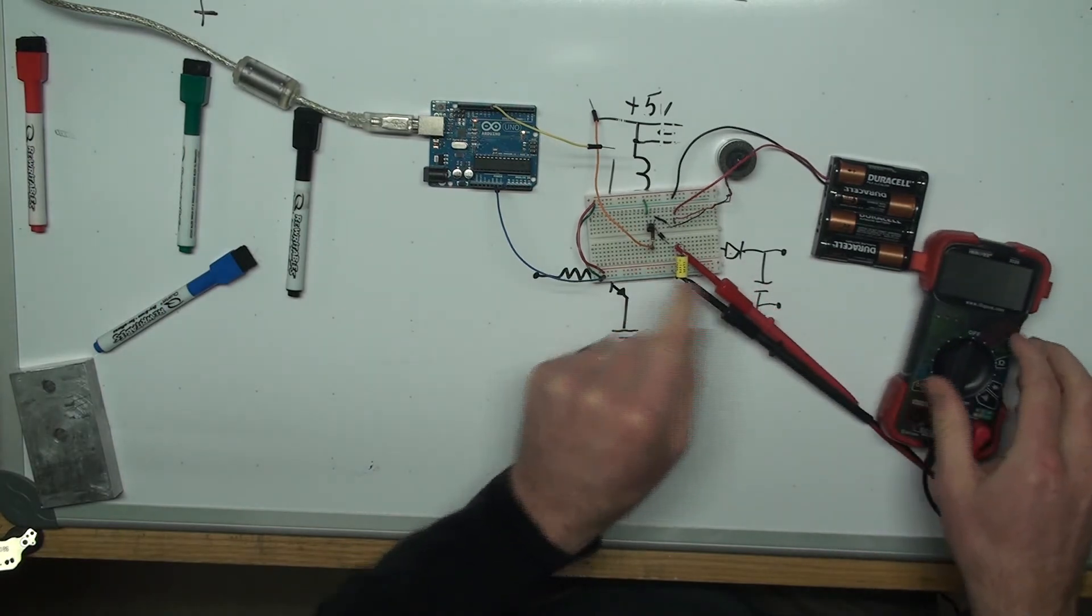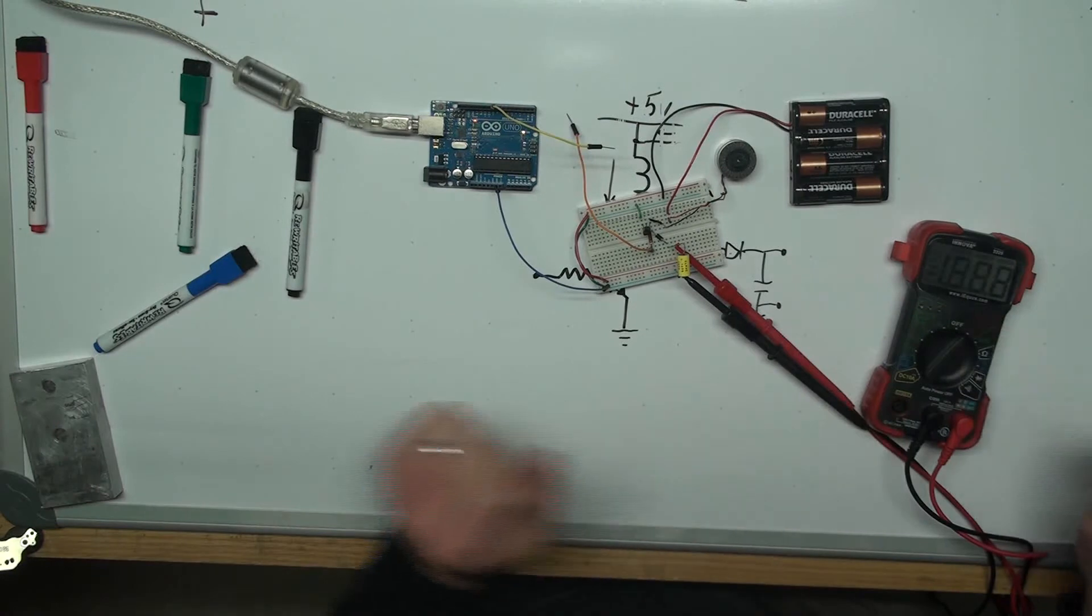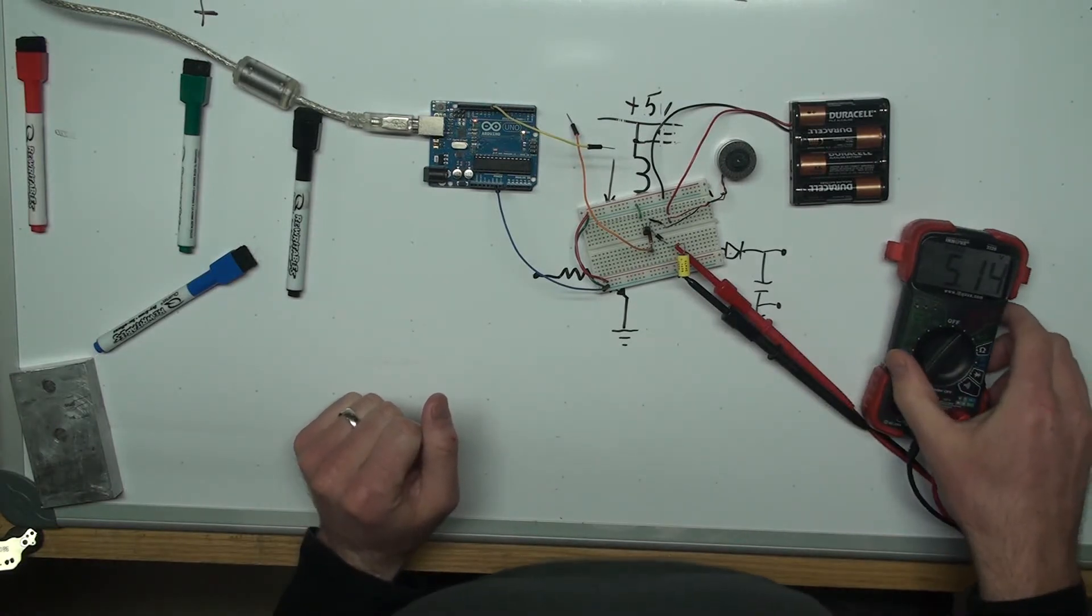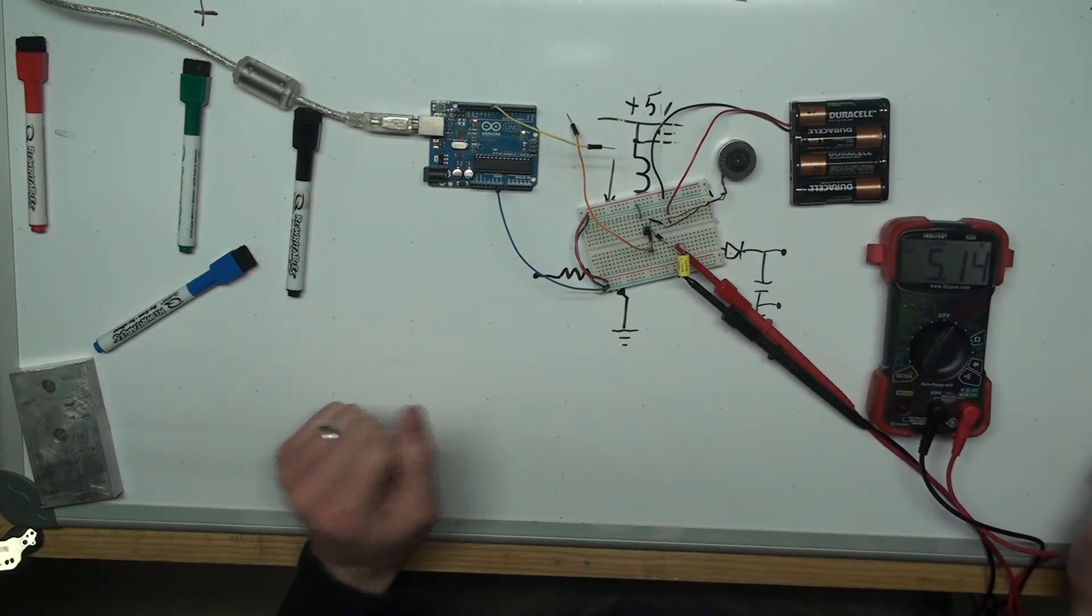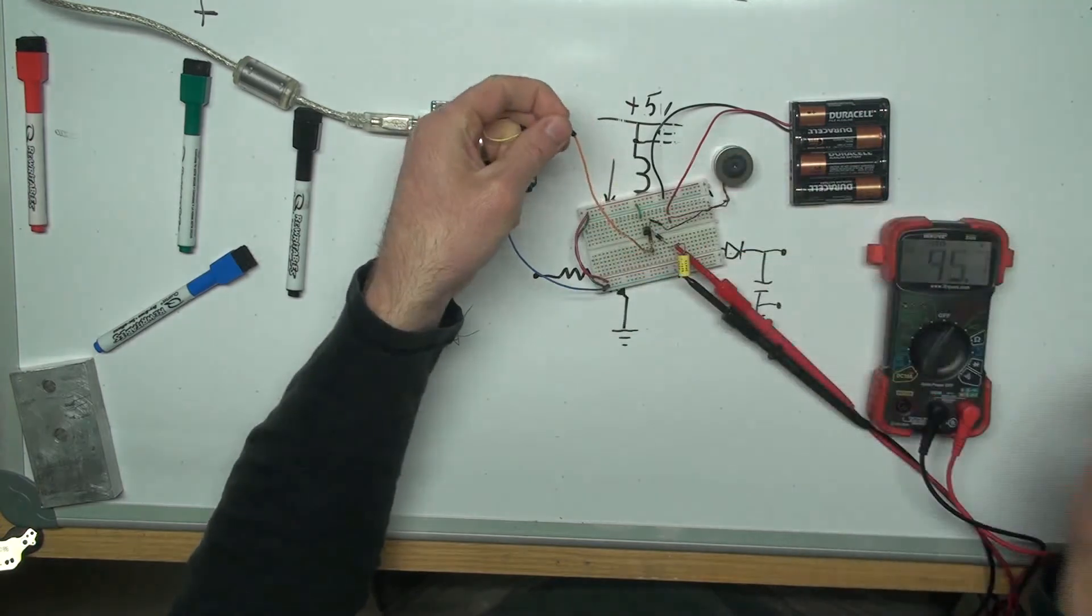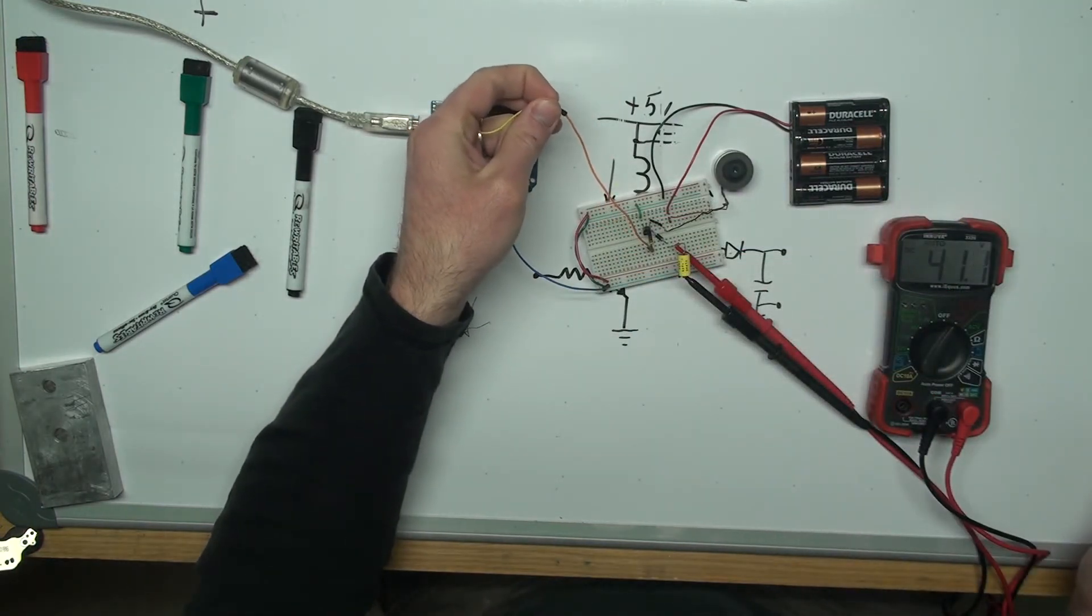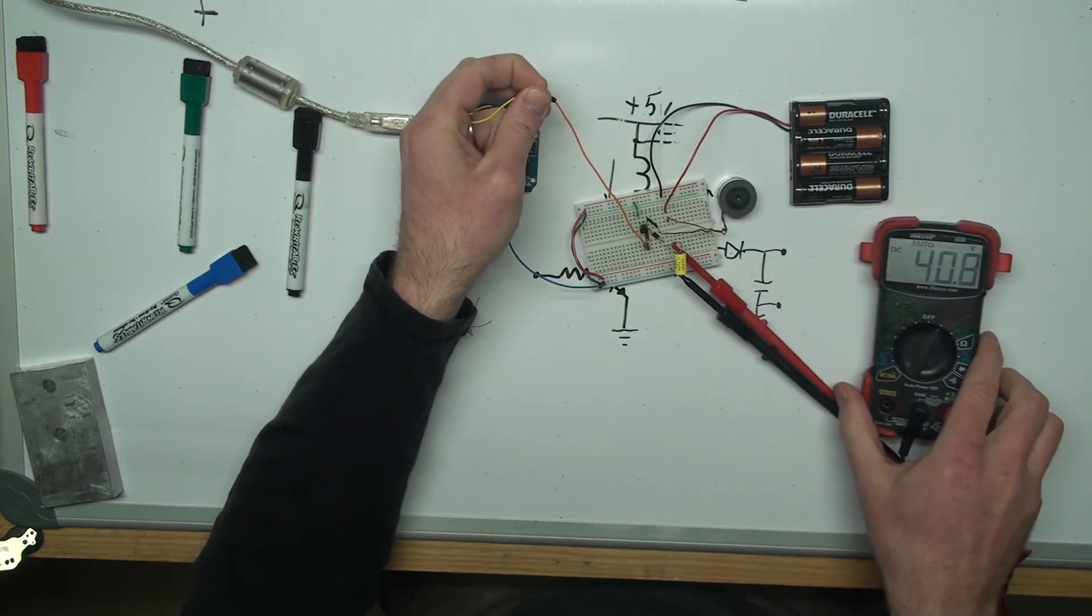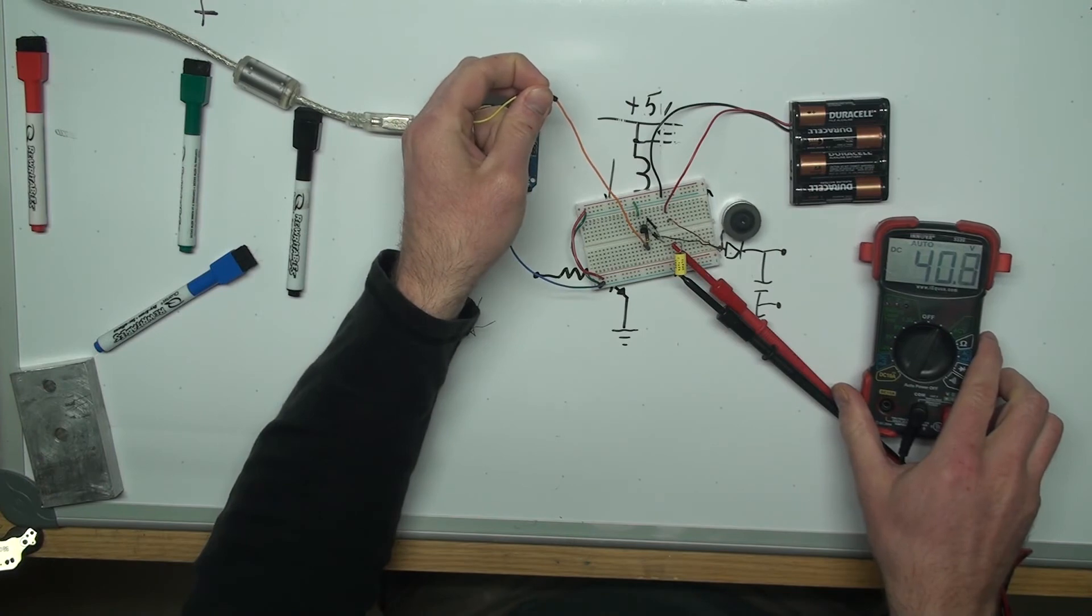The multimeter over here, turn it on. You can see I've got 5 volts max output at the moment. Connect these up. The motor is running and you see that I'm getting over 40 volts that's hitting that transistor.